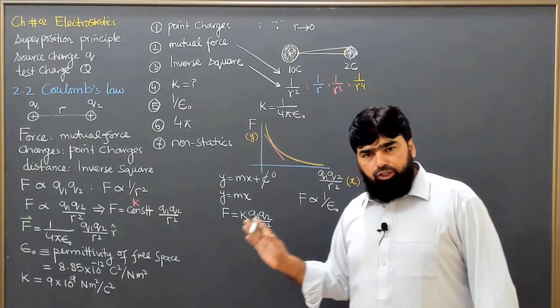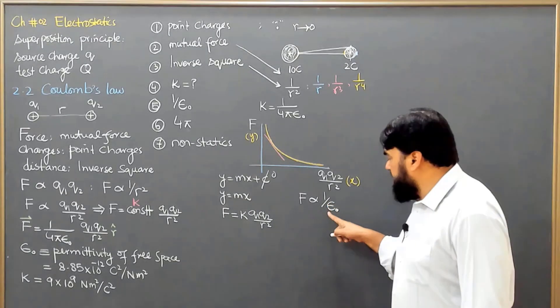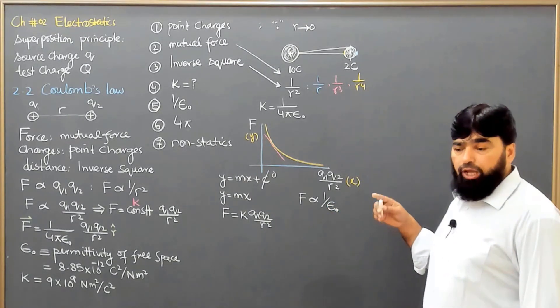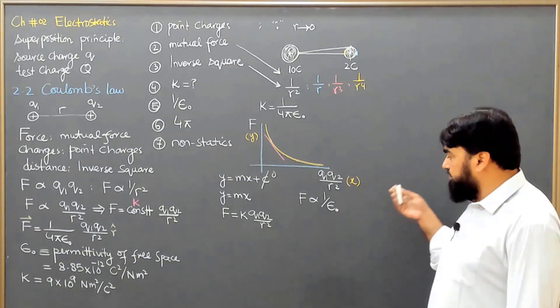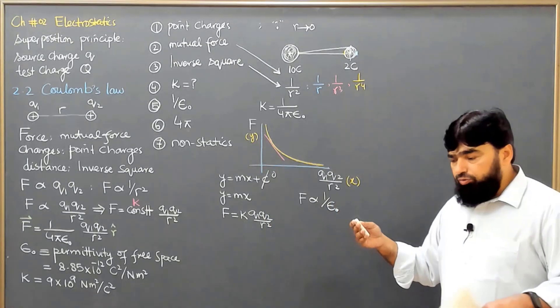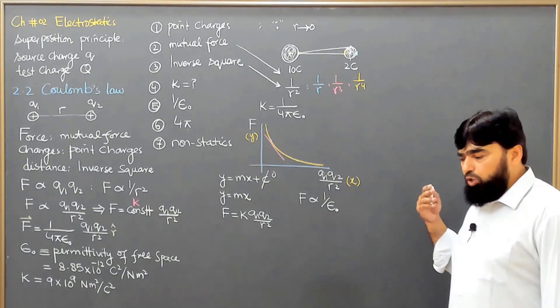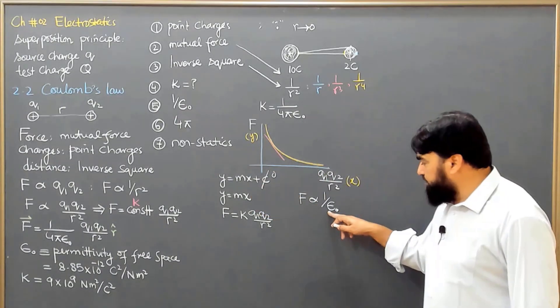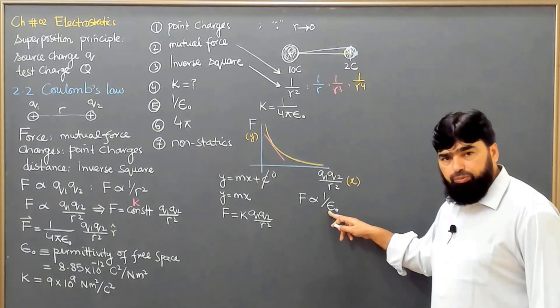From its name, it is crystal clear that this is permission. Permission to what? Permission to the interaction lines, permission to the field lines. So how the field lines are passing through from one charge to the other charge, while passing through this medium, this medium is free space.